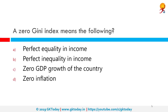A zero Gini index means which of the following? The correct answer is perfect equality in income. The Gini coefficient, sometimes called the Gini index or Gini ratio, is a measure of statistical dispersion intended to represent the income or wealth distribution of a nation's residents. A country where every resident has the same income would have a Gini coefficient of zero.